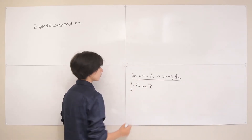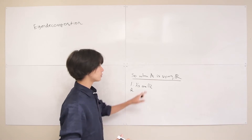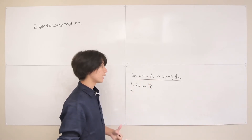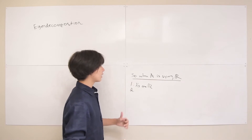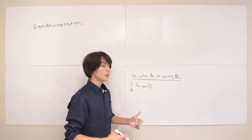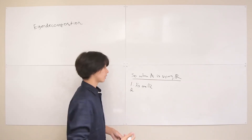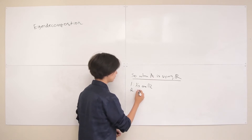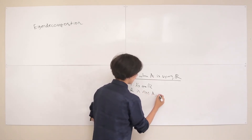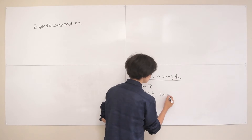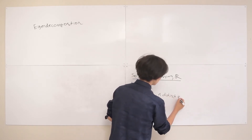Second, in some n-by-n matrix — because A is always going to be a square n-by-n matrix — you're going to have n distinct eigenvectors. So in an n-by-n matrix A, you get n distinct eigenvectors.